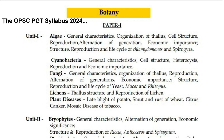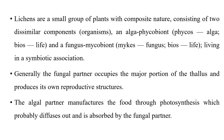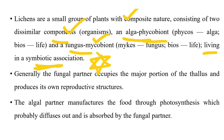What is lichen? Lichens are a small group of plants with a composite nature. Composite nature means they have two components: one is the algal component or phycobiont, and one is the fungal component or mycobiont. They both live in symbiotic association — this is very important.